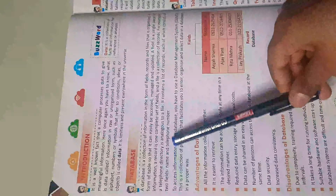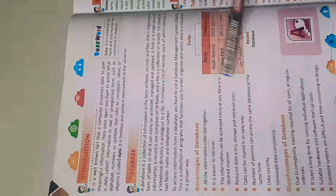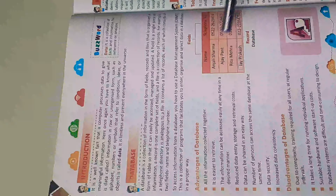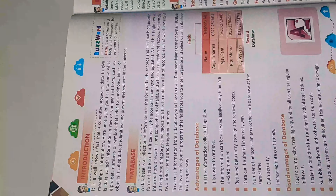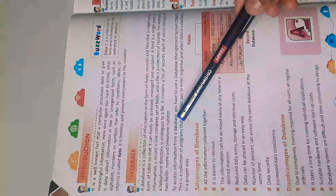It contains a list of records, each of which consists of two fields: name and telephone number. As you can see, the name and telephone together form one complete set of fields. To access information from a database, you use a database management system.